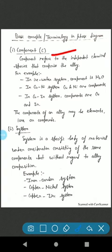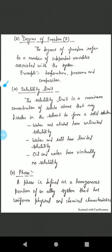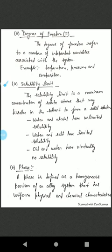Now we come to the next topic - degree of freedom. What is the degree of freedom? The degree of freedom refers to a number of independent variables associated with the system - example temperature, pressure and composition. These are the independent variables which are called the degree of freedom.